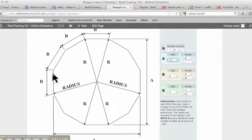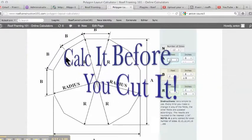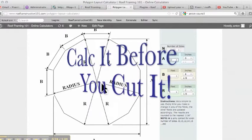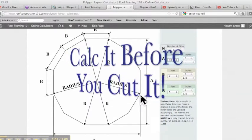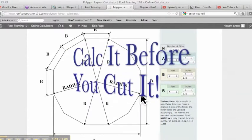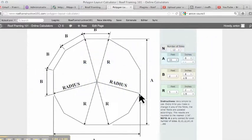that B and R automatically have dimensions in there. And so B is the length of all the sides, and we know that there's 12 of them, and that's 2 feet 8 and 1/8 inches, and then R is the radius. It gives you the radius to the outside corners of 5 feet 2 and 1/8 inches. So this is all you need to lay out your polygon.